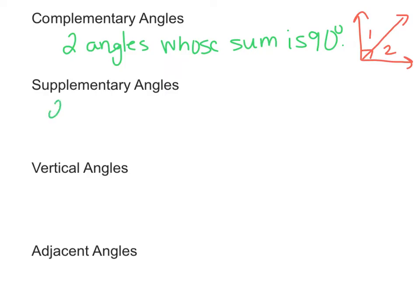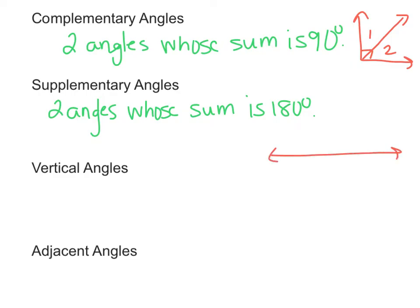Supplementary angles are two angles whose sum is 180 degrees. These are two angles that add up to 180 degrees. A 180 degree angle is a straight line like this. So if we had a ray coming out of here, angle 1 and angle 2 would be supplementary because they would add up to 180 degrees.